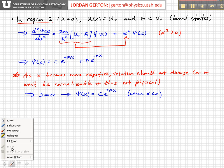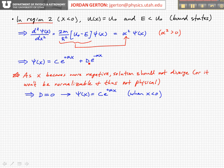That basically says that we eliminate D, that D goes to zero. So we're left with ψ(x) = Ce^(αx), and since X is negative, this is going to give us an exponentially decaying solution.